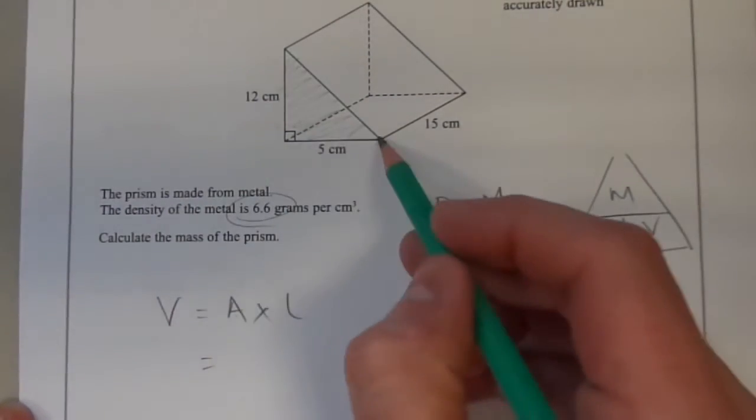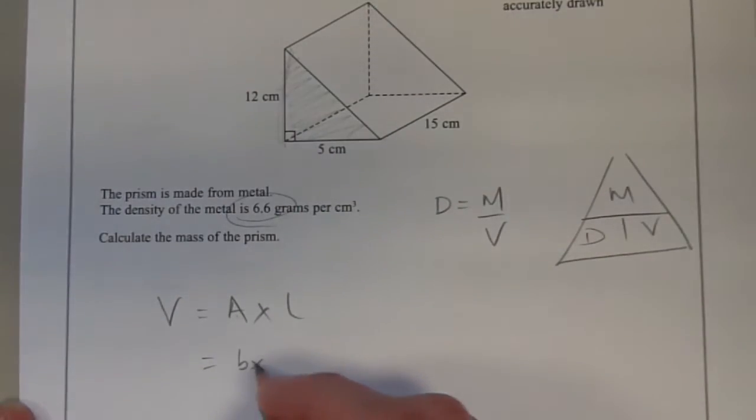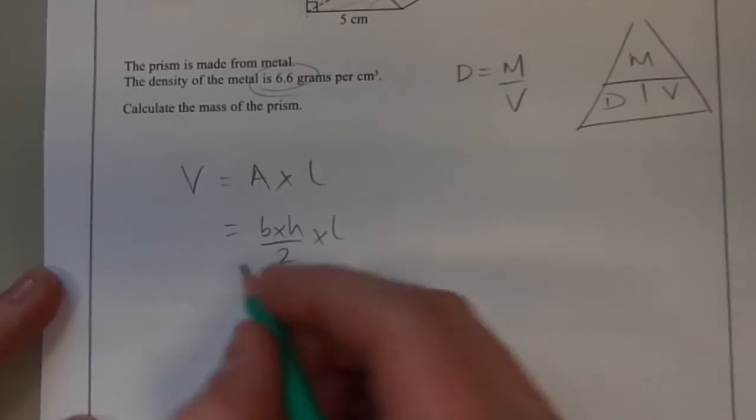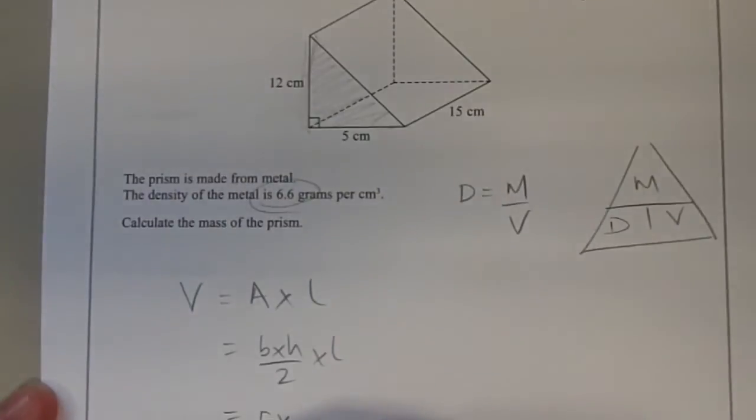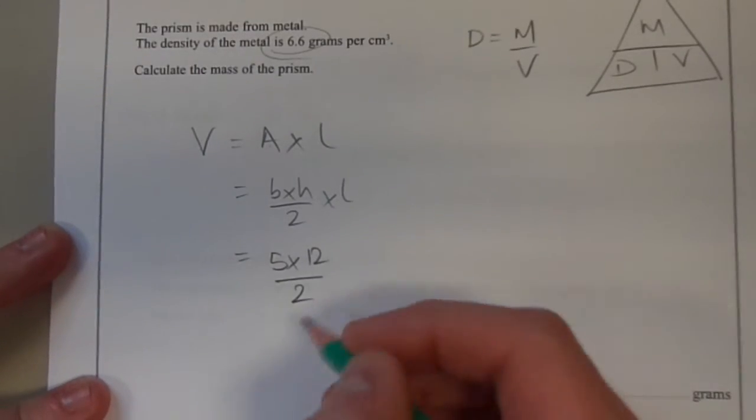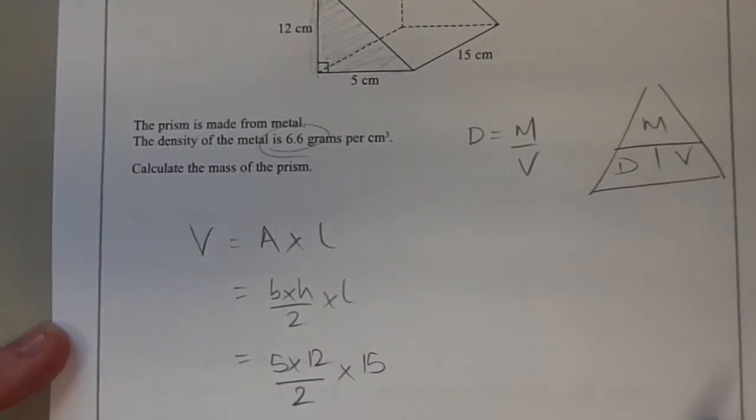So the area of the cross-section, the cross-section is a triangle, so it's base times height over 2 multiplied by length. The base of this triangle is 5, the height is 12, and we need to half it, and then we need to multiply that by 15.